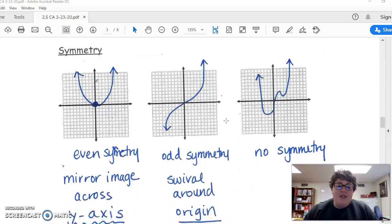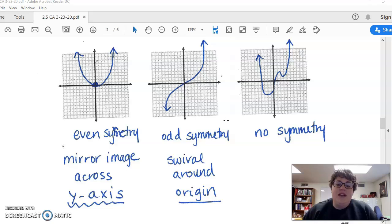Now let's talk about symmetry. If it's even symmetry, it's a mirror image around the y-axis. If it's odd symmetry, it rotates around the origin—you can take the top half, rotate it around, and it becomes the bottom half. You can also have no symmetry.